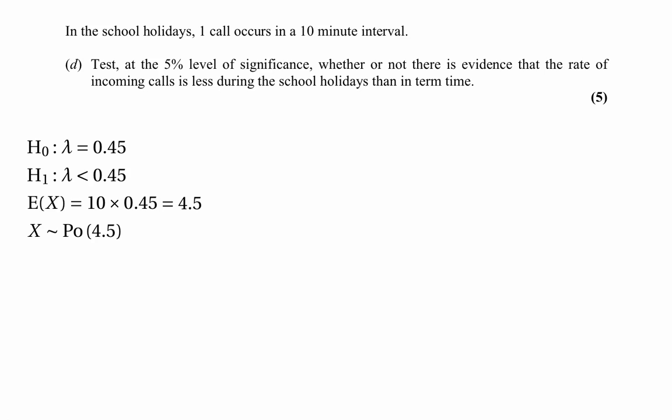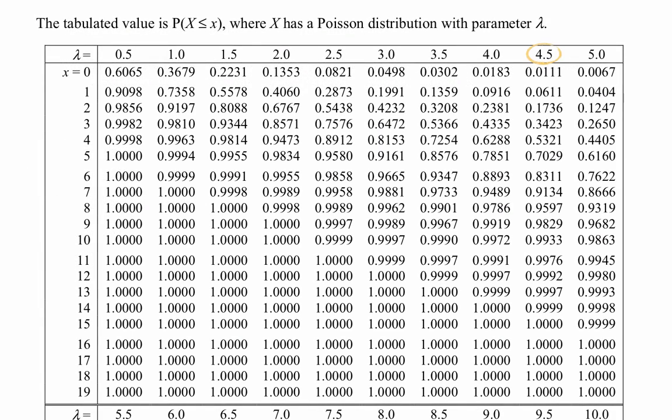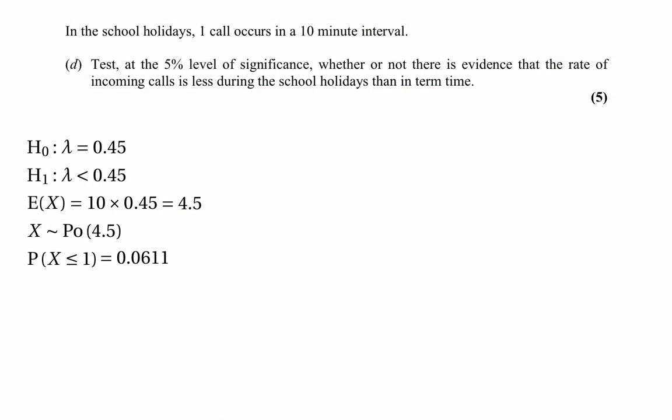We could find a critical region, but it's simpler to just work out the probability of getting one call or less and see whether that probability is sufficiently low to reject the null hypothesis. We find P(X ≤ 1) — because one is the observed number of calls in the 10-minute interval. Looking at the tables for lambda equals 4.5, with x equals 1, the probability is 0.0611. Since 0.0611 is greater than 5%, we cannot reject H0.